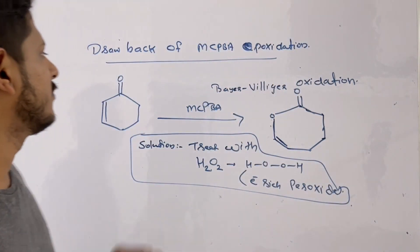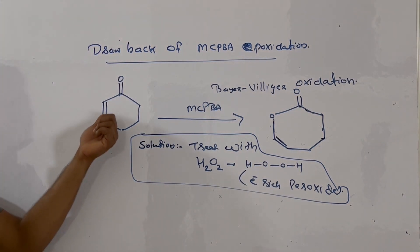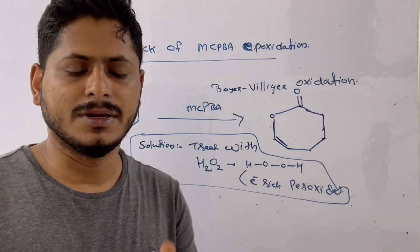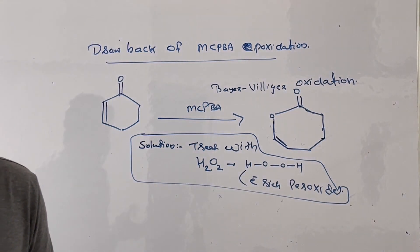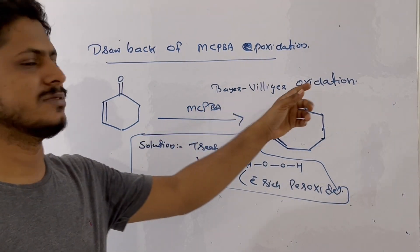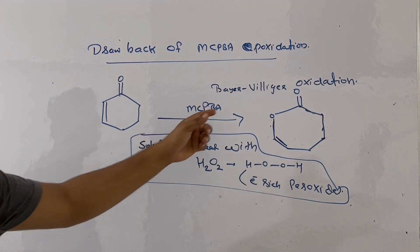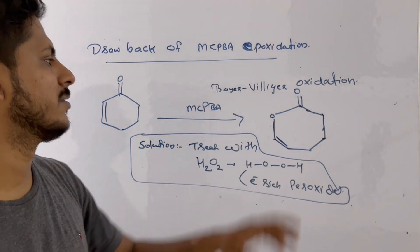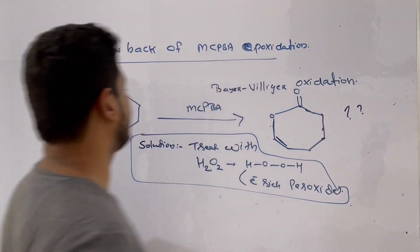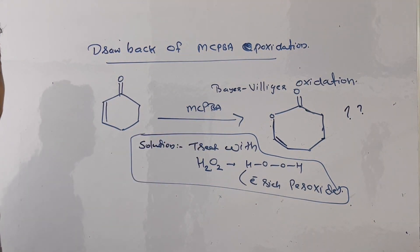Now there is a drawback of mCPBA epoxidation. If your substrate contains both an alkene and a ketone group, mCPBA will also undergo Baeyer-Villiger oxidation. In Baeyer-Villiger oxidation, the ketone converts into an ester group. So you get a competition between epoxidation of the alkene and Baeyer-Villiger oxidation of the ketone. This is one major drawback of mCPBA.